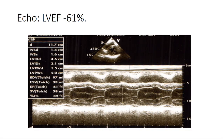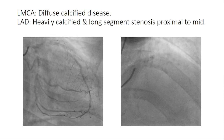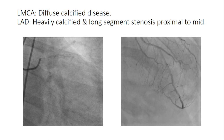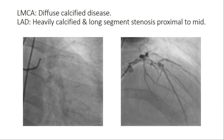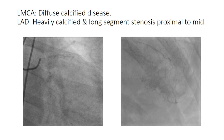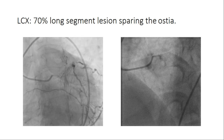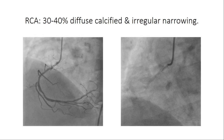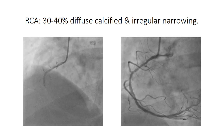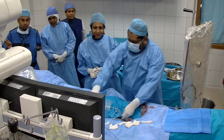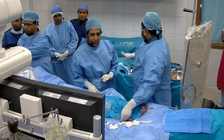His ECG is pretty normal with a slight amount of left ventricular hypertrophy. Looking at his angiogram, he's got pretty severely diffuse and calcified lesions. The left main is diseased and calcified, the LAD has a huge calcium burden with a long segment stenosis extending to the mid segment. The LCX has a 70% lesion, and the RCA is diffusely calcified with around 30 to 40% lesion.